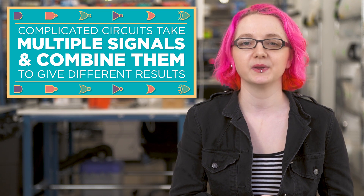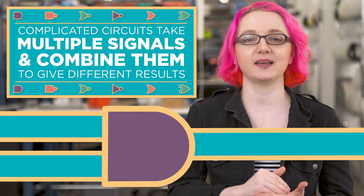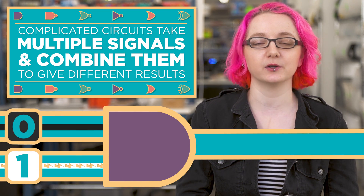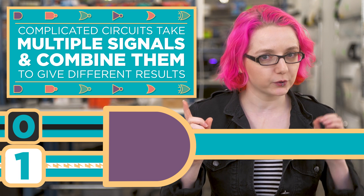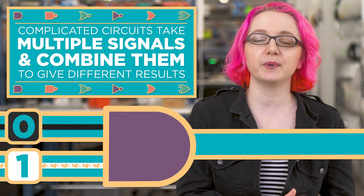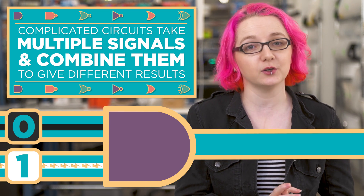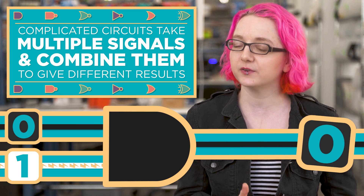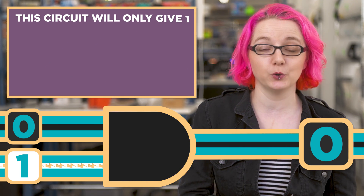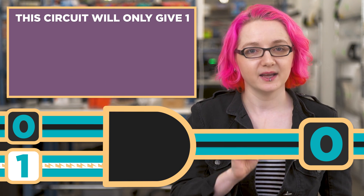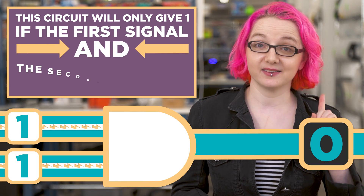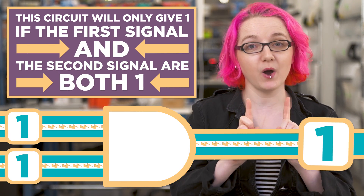In this example, a circuit will take two electrical signals — each one might be a one or a zero. If either of the signals coming in is a zero, then the result is also a zero.